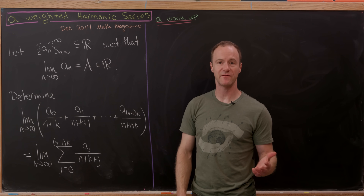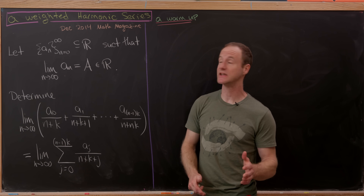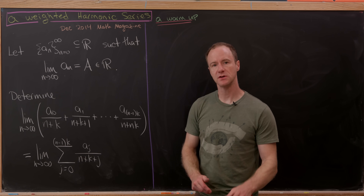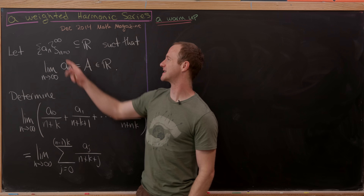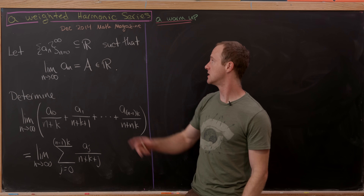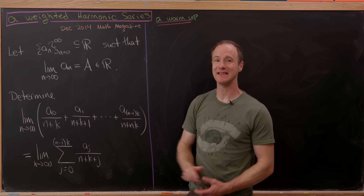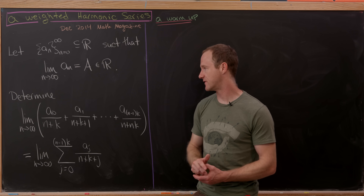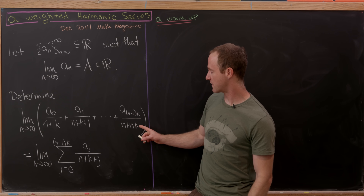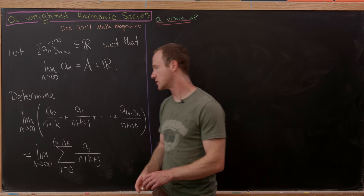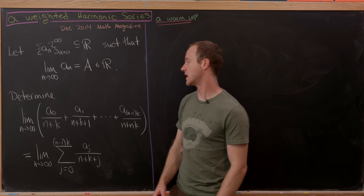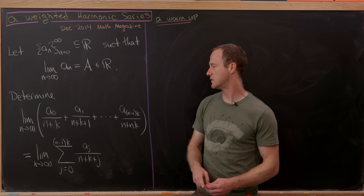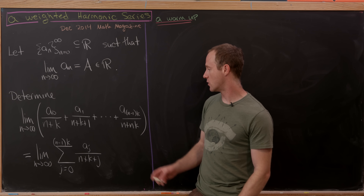Today I've got a nice problem from a 2014 issue of Math Magazine, and it has to do with a weighted version of the harmonic series. We have a sequence of real numbers a sub n such that the limit of that sequence equals capital A, a real number — the limit exists and is not infinite. Our goal is to determine the limit as n goes to infinity of a₀/(n+k) + a₁/(n+k+1) + ... + a_{n−1·k}/(n+nk).